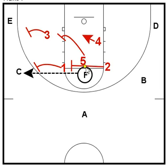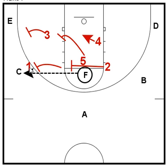Here we see F with the ball and 5 covering F, covering the high post. Now when F makes the pass out to the wing area to C, 1 is going to be the closest person and come out and guard C.